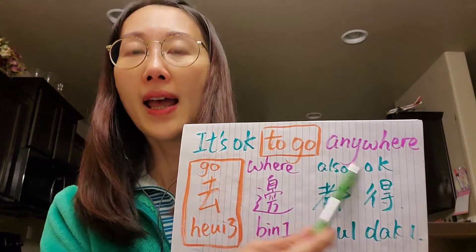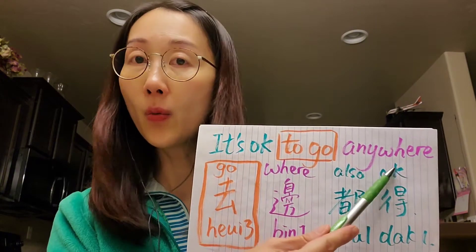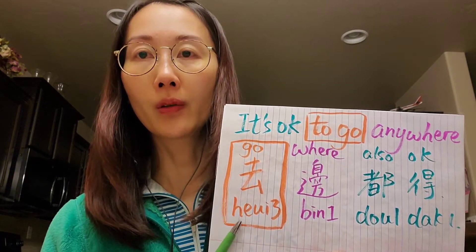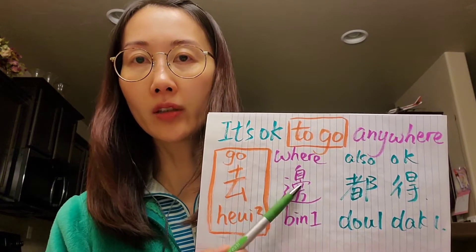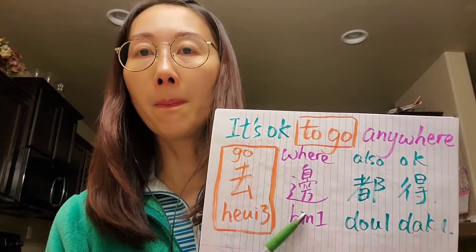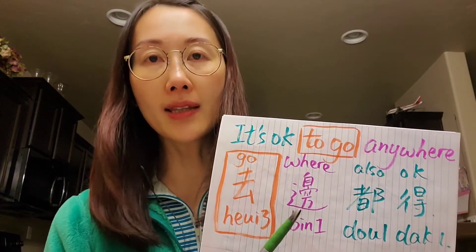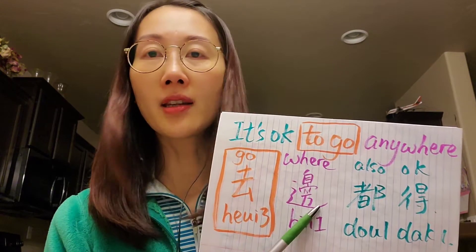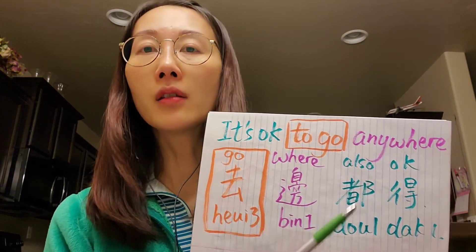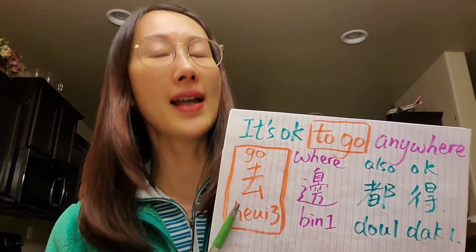Let's see another example: 'It's okay to go anywhere.' We say the verb 'go,' and then the question word for 'where.' In Cantonese, 'where' is 邊, the short form, or 邊度 — both are okay. So 'it's okay to go anywhere' is 去邊度都得.